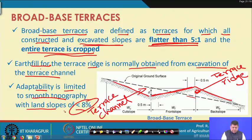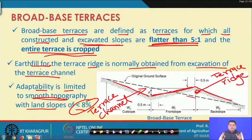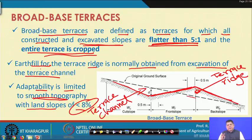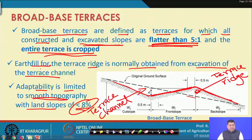The land slope should be less than 8 percent, and the topography should be smooth because the entire area should be cultivated. This means there will be movement of agricultural machinery — tractors, power tillers, or manual cultivation. Therefore, the land should be smooth enough for agricultural operations, and slope should be limited to 8 percent for the adaptability of broad based terraces.